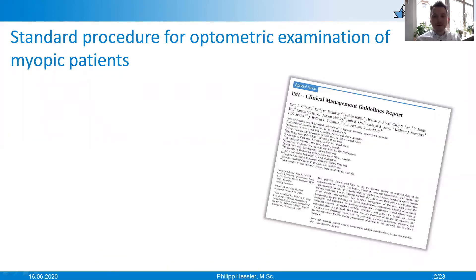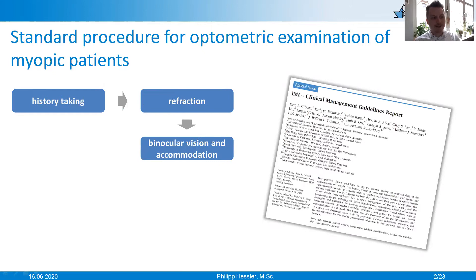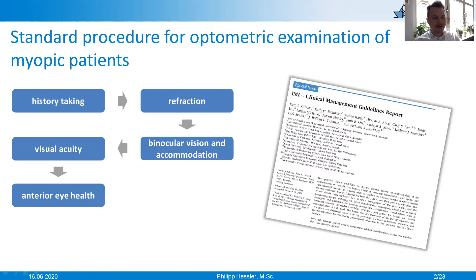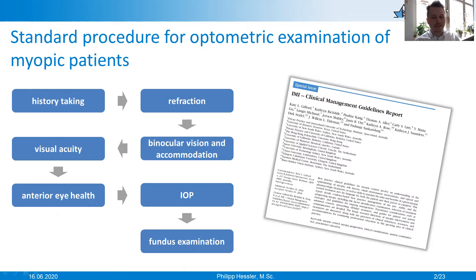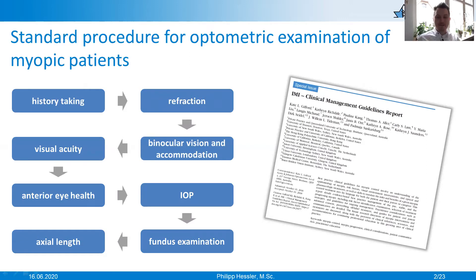I'm very grateful that the International Myopia Institute has defined some guidelines in a white paper at the beginning of 2019 on the content of optometric examination in myopic patients. And we see that's history taking, refraction, binocular vision and accommodation, visual acuity, anterior eye health, intraocular pressure, fundus examination, and last but not least, the axial length measurement. Axial length measurement is the primary outcome measure for myopia, and this is what we will be looking at in the slides that follow.